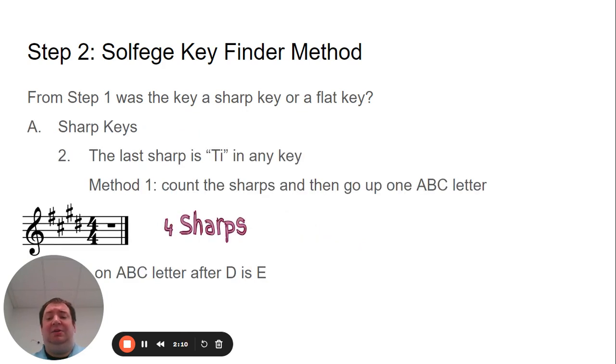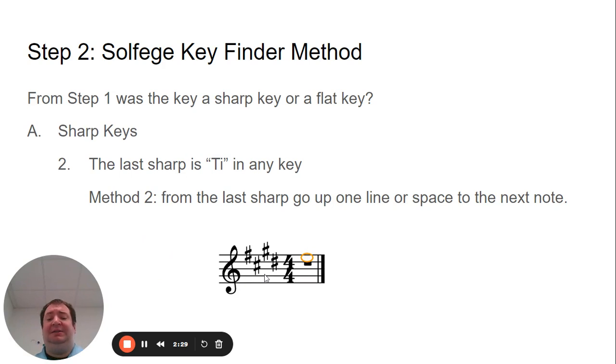Then in sharp keys, the last sharp is ti in any key. So if this is D sharp, then D up one alphabetical letter is E—that would be do. So I could go in alphabet, D to E. I could also look at the next line or space visually. If I go up to the next line or space, that would be this space. And if you see a space, you spell face: F, A, C, E. So this is the key of E major.